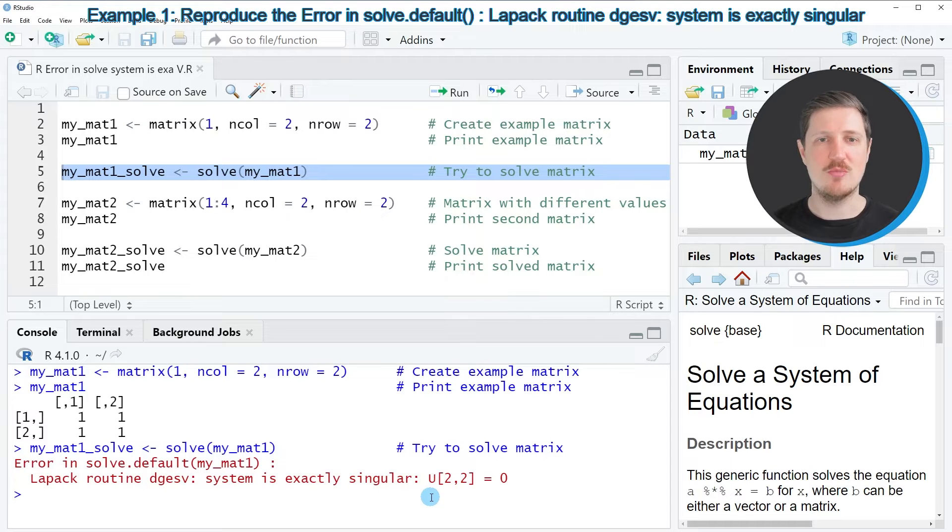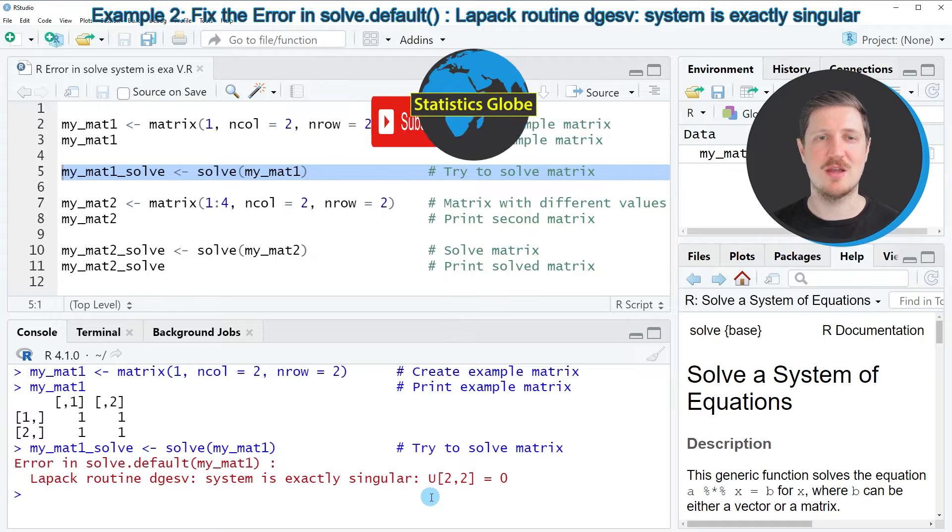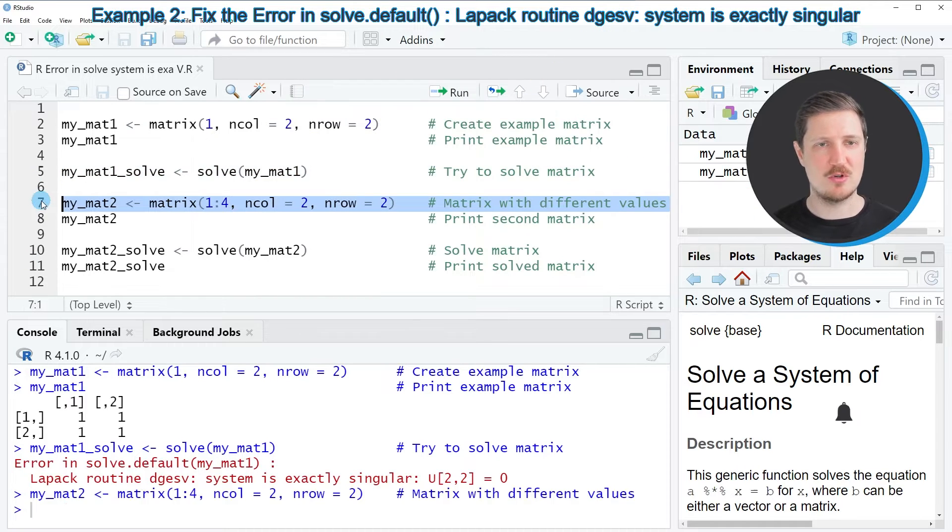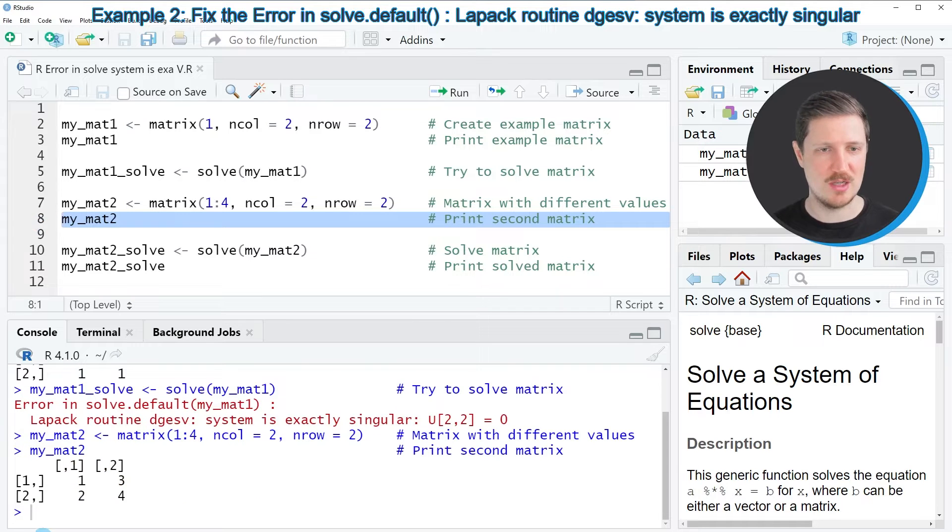If we want to make the SOLVE function work properly, we need to create another matrix as you can see in line 7 of the code. In this line of code I am creating a matrix called MYMAT2, and we can print this matrix to the bottom in the RStudio console by running line 8 of the code. Then you can see that we have created another matrix that also contains two rows and two columns.